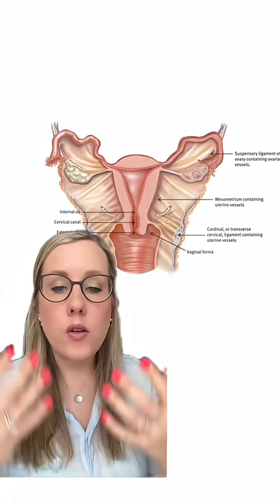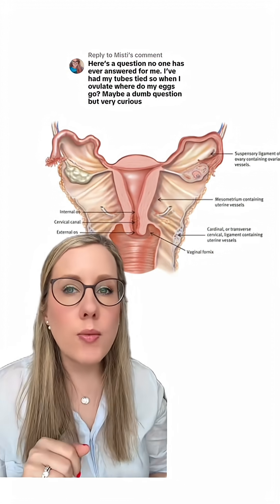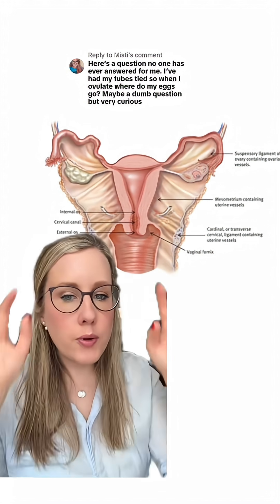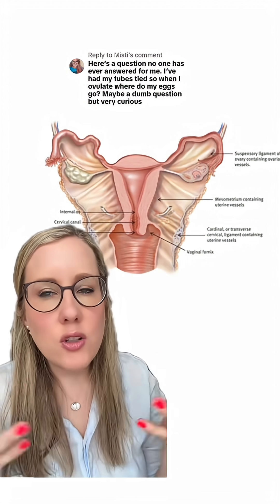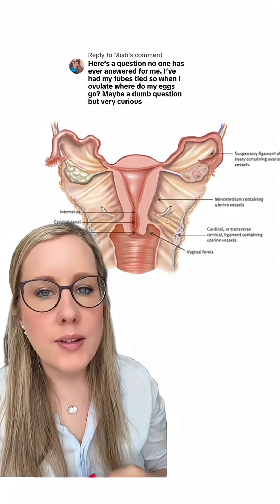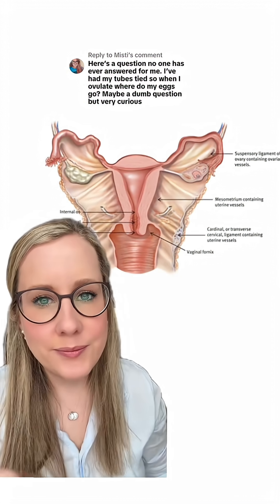When you ovulate every month and you no longer have a uterus and fallopian tube, there's no fallopian tube to grab up that egg, so that egg just goes into your abdominal cavity and disintegrates.